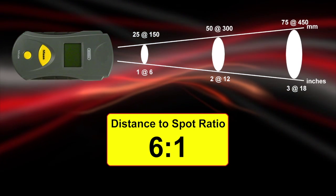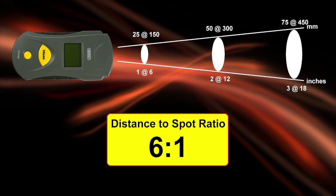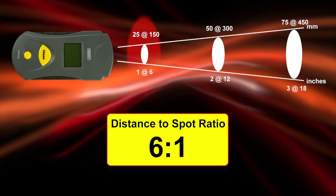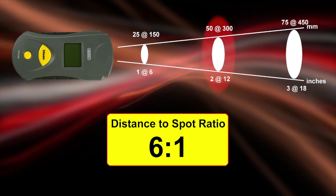The IRT105 boasts a 6 to 1 distance to spot ratio with laser targeting. Measure a 1-inch target from 6 inches away or a 2-inch target from 12 inches.